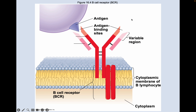Looking at a model of a B cell receptor: we have our cell membrane of a B lymphocyte cell, cytoplasm below, and the extracellular environment above. The purple thing with the cone on it is the antigen, and this antigen is going to interact with the antigen binding sites on the B lymphocyte.